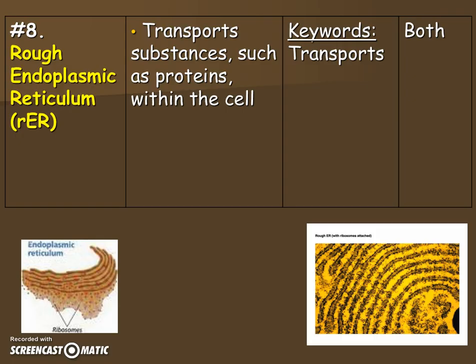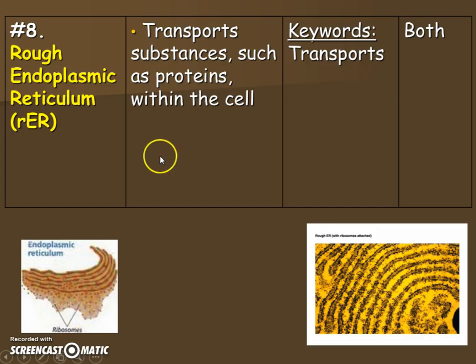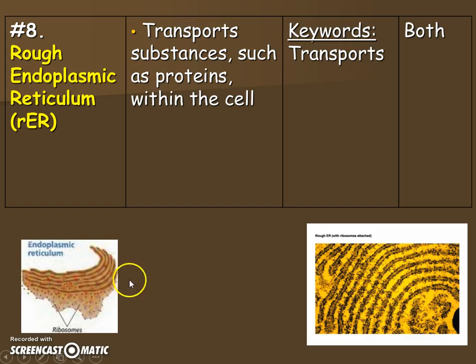We're going to talk about the endoplasmic reticulum — specifically the rough one, which we call rough ER. This is a transportation highway, and it's going to transport proteins. What makes the rough ER rough? It's the freckles or dots on it — the ribosomes. So I can remember rough for ribosomes. Think about it like a sesame bagel — if you put your hand on it, it would feel rough like sandpaper. Those ribosomes make proteins, and this highway system sends the proteins around the cell. Keyword: transport or highway. This is in both plants and animal cells.